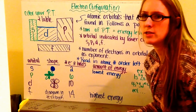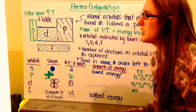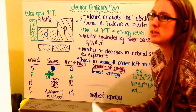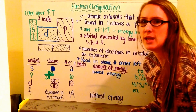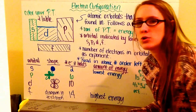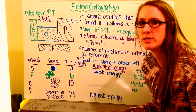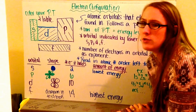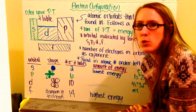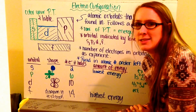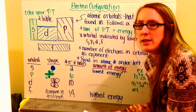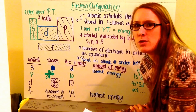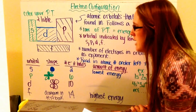This video is on electron configuration. The electron configuration is based off of the quantum mechanical model, or Schrodinger's model, of the atom, which is the model that we use today. It states that electrons are found in different orbitals having different energy levels, and that an electron is found to be in those orbitals 90% of the time.